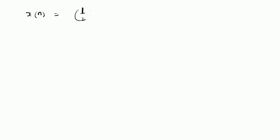Hello, welcome. In this short video, let us look at an example illustrating the application of the linearity property for finding the Z-transform of a signal. Given the signal X of n equal to 1/2 to the power n for values of n greater than or equal to 0, and 3 to the power n for n less than 0, we want to find the Z-transform of the signal.